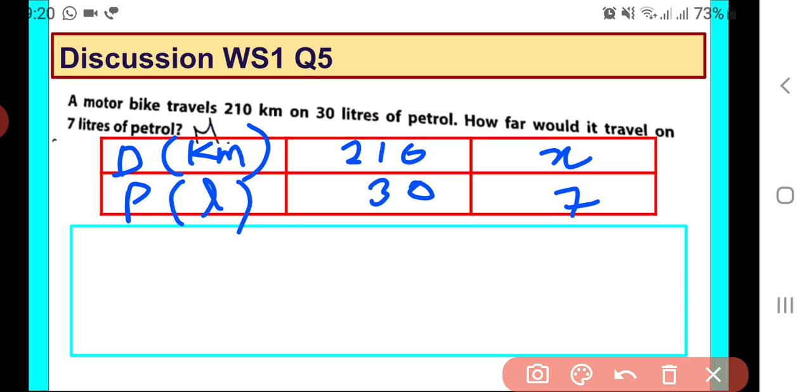Now first of all, we need to understand whether it is a case of direct variation or indirect variation. When there will be more petrol, more distance will be traveled. When there will be less petrol, less distance will be traveled.